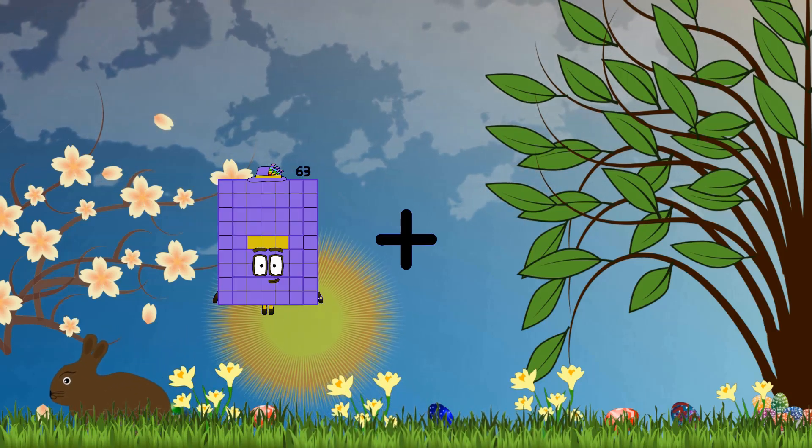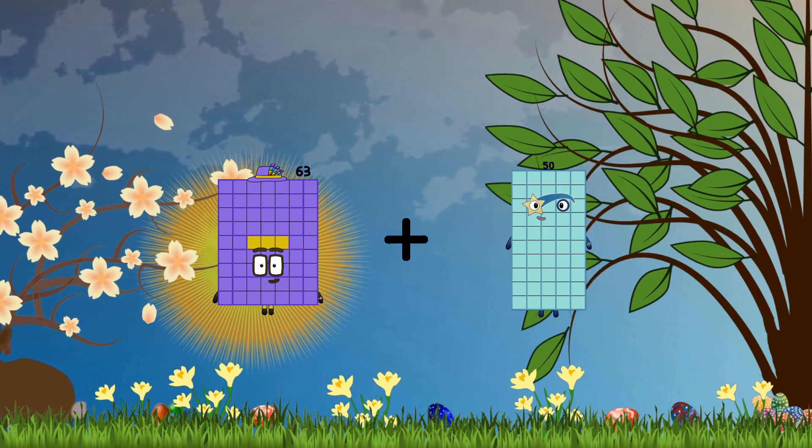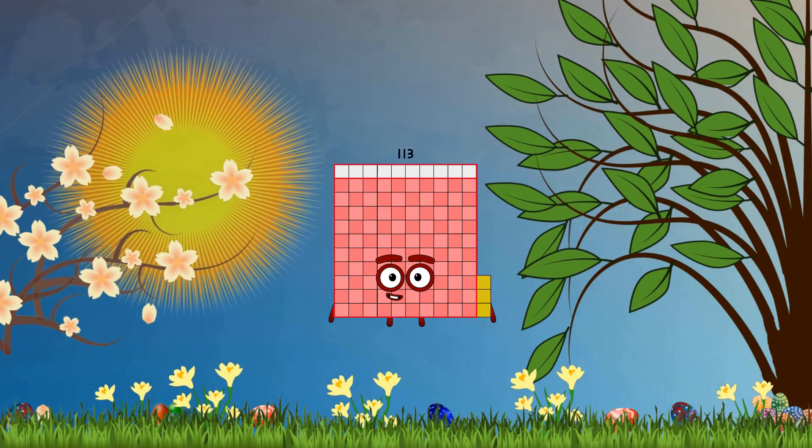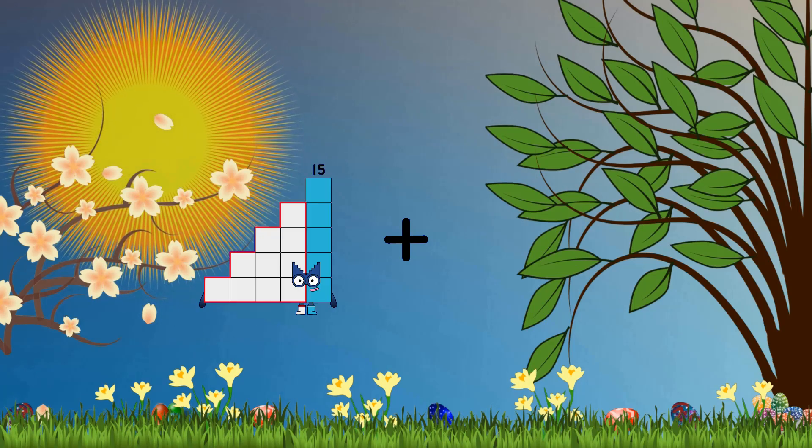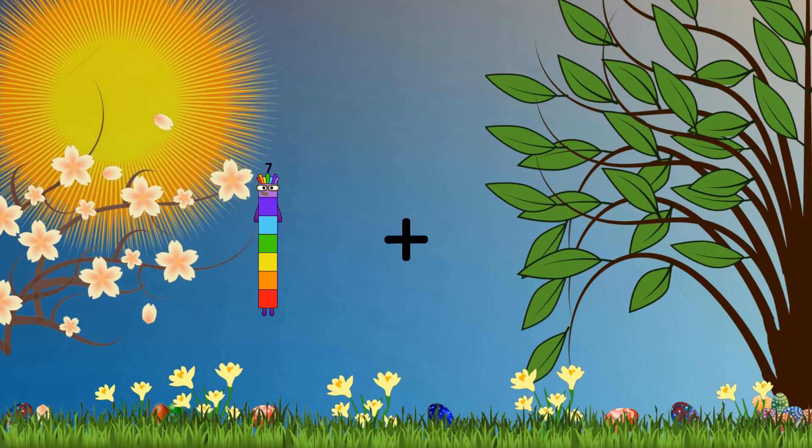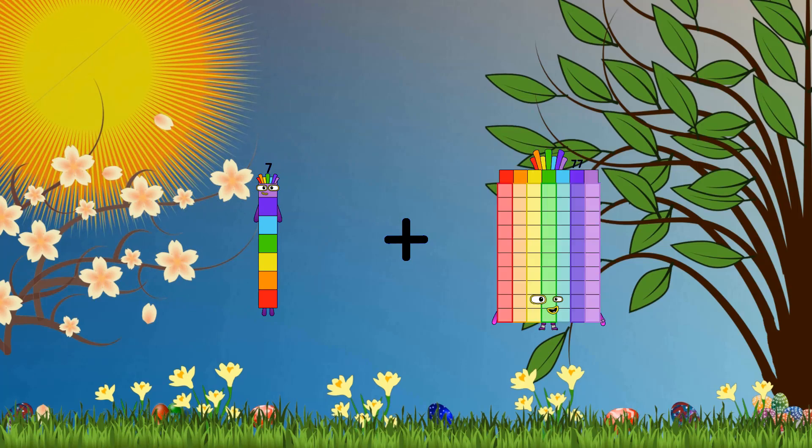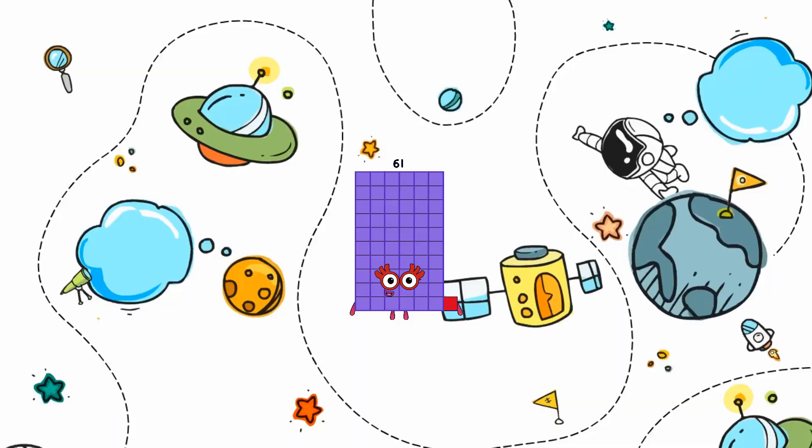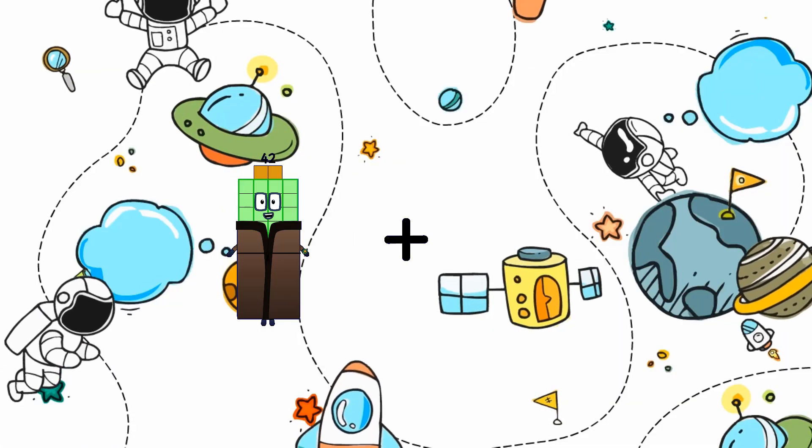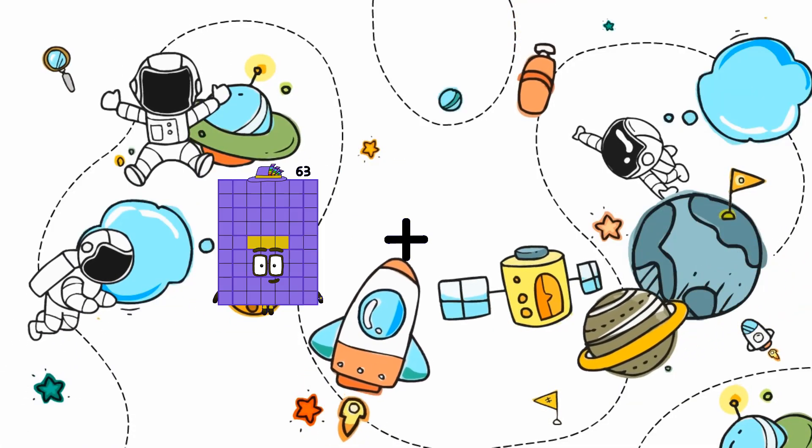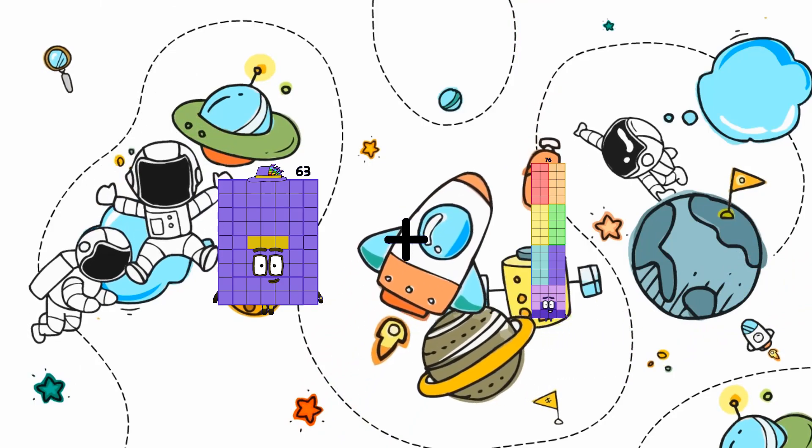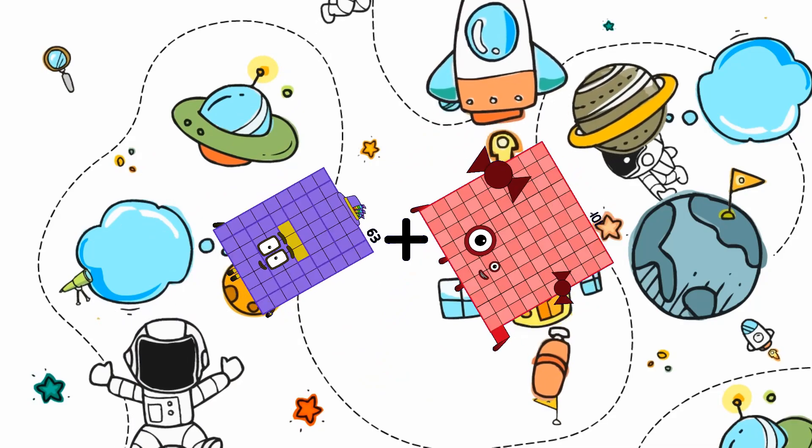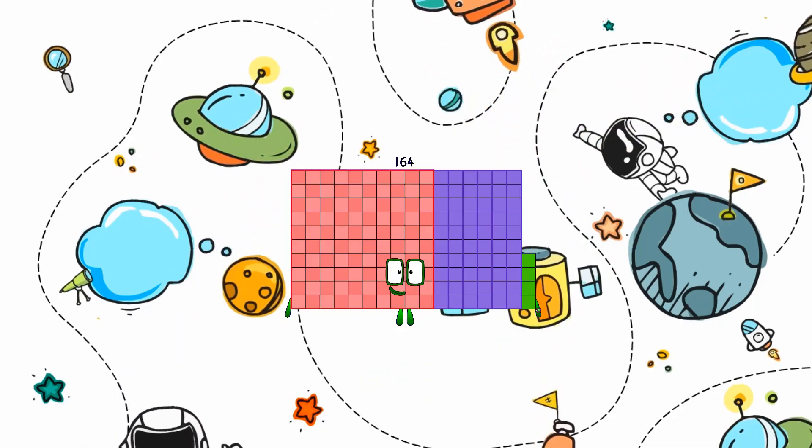63 plus 50 equals 113. 7 plus 54 equals 61. 63 plus 101 equals 164.